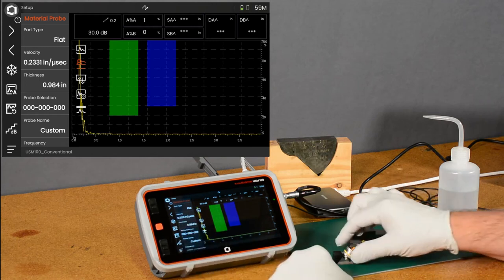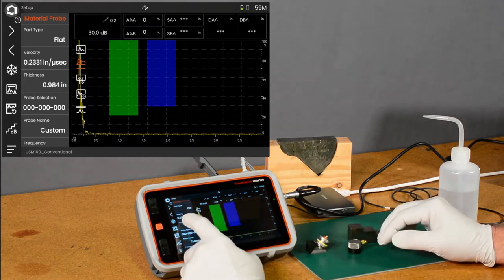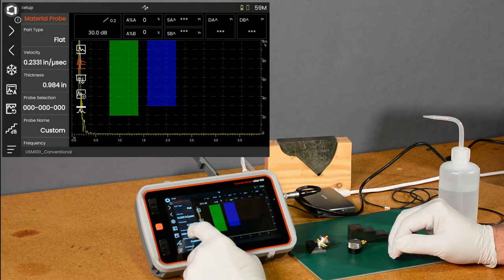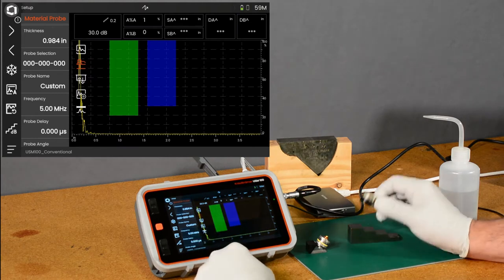Because we're going to be doing a straight beam calibration on a steel block, the default velocity of 0.23 inches per microsecond is going to be close. The probe frequency is already selected at 5 megahertz, so that's going to do a good job of setting the pulsar width.